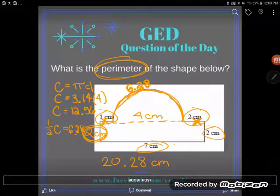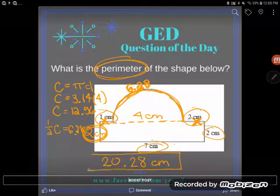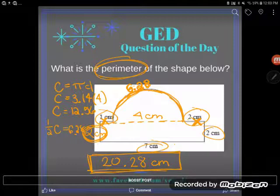And when I total them all up I get 20.28. 20.28 what? Well we're just measuring the distance of a line so plain old centimeters. Perimeter is always measured in regular units.